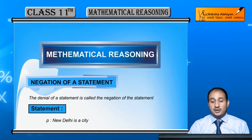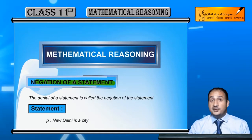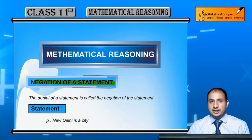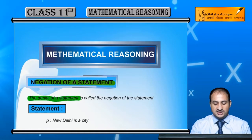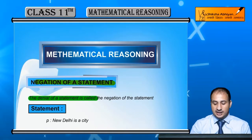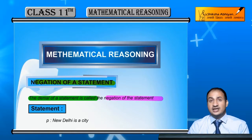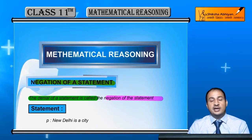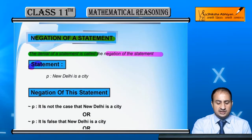Now we see the next concept of the chapter, and this is negation of a statement. Aapne statement dekh li hai ke statement kya hota hai. Ab uska negation kya hota hai - negation simply the denial of a statement is called negation of a statement. Jab kisi statement ko deny karte hain - agar statement pe 'yes' ho raha hai, aap usse 'no' mein deny karte hain, to wo negation of the statement ho jayega.